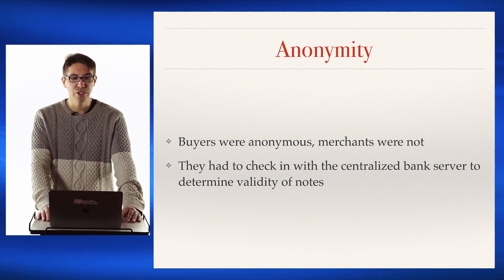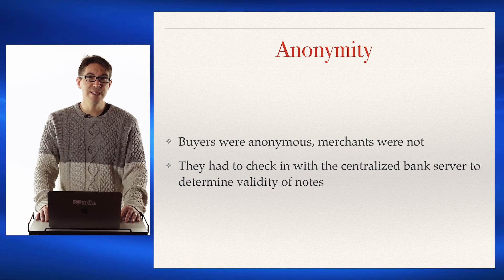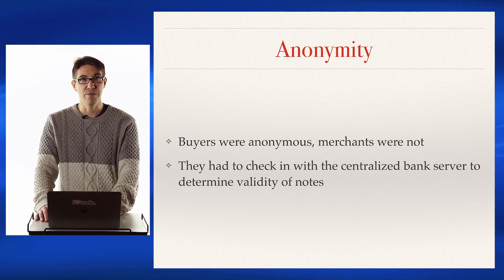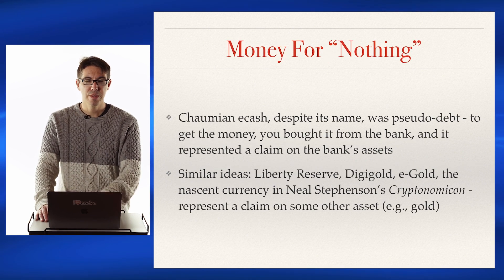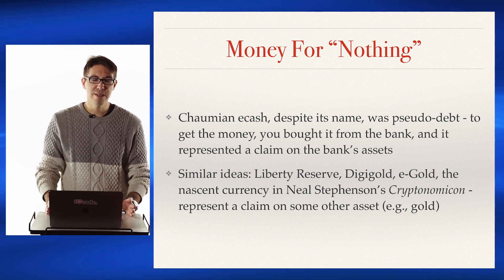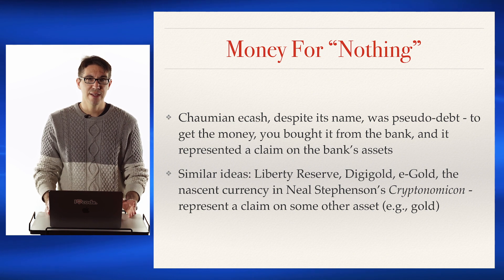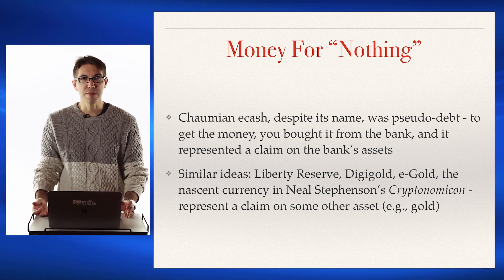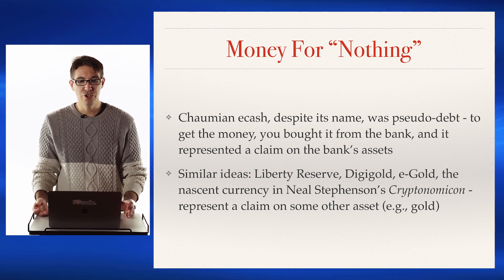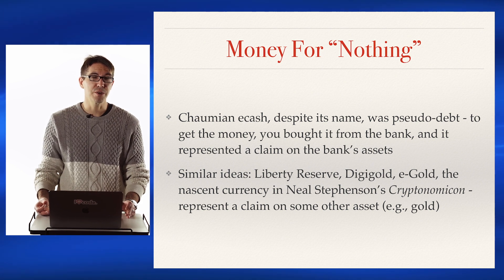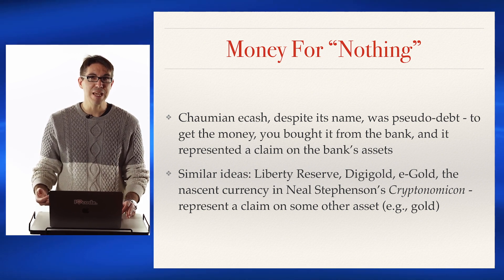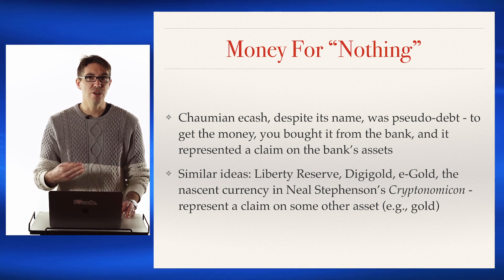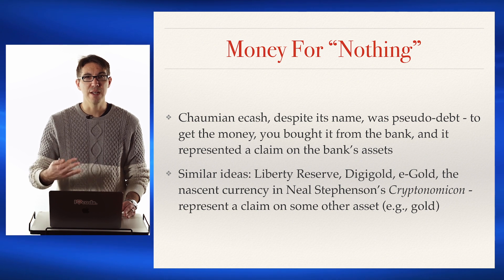The other problem with DigiCash and eCash is that while buyers were anonymous, merchants were not. If you wanted to accept eCash, you would have to give your identity away because they would have to check with the centralized bank service to determine the validity of the notes. So just because it was called eCash, it really was a sort of pseudo-debt — to get the money, you were buying it from the bank, and it represented a claim on the bank's assets. Other systems like Liberty Reserve and DigiGold, or the cryptocurrency in Neal Stephenson's novel Cryptonomicon, always represented a claim on some other asset. The digital representation did not have value in and of itself.